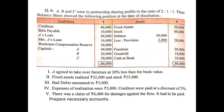Now let us read the remaining points. Point one: partner A agreed to take over furniture at 20% less than book value. The furniture value is 20,000; 20% of 20,000 is 4,000. So A is taking the furniture at Rs. 16,000. When any partner takes away an asset, it reduces their capital. So this will be shown on the debit side of A's capital account as: to realization 16,000 — not furniture, because we have already transferred furniture to realization.